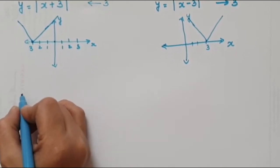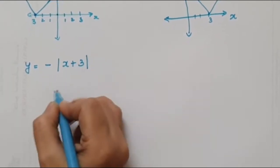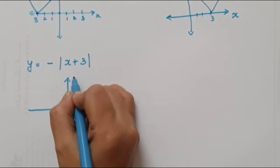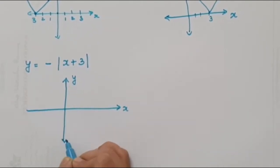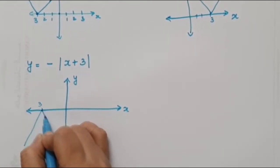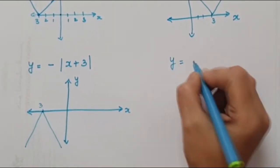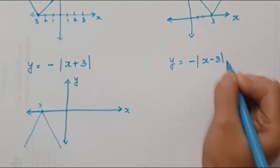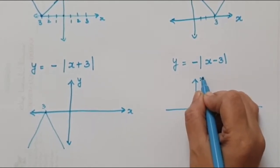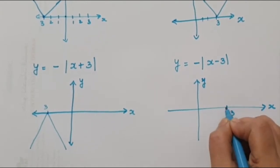Now suppose if our graph is y = -|x + 3|. The same thing — we just reflect it in the x-axis, so the graph opens downward. Similarly, y = -|x - 3| means the graph shifts 3 units to the right and is then reflected below the x-axis.